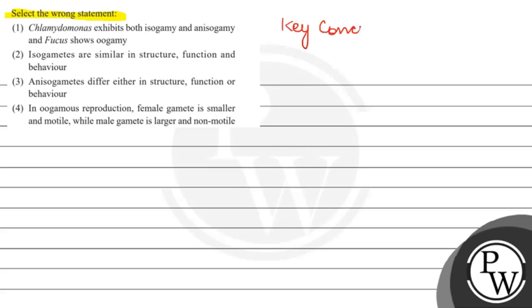It is a very easy but important question. We will use the key concept of reproduction. We have seen three main types: isogamy, anisogamy and oogamy. Let's talk about them.